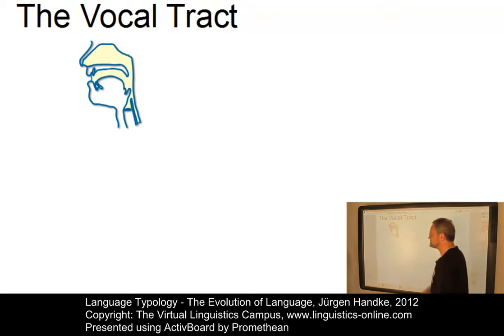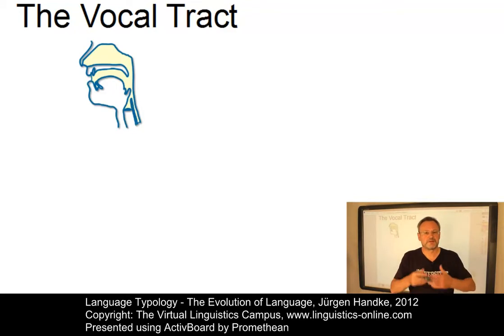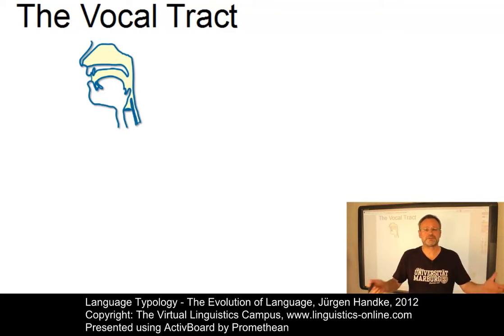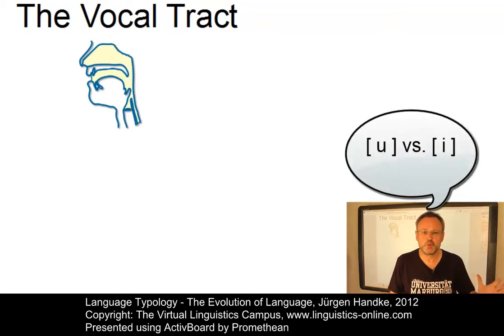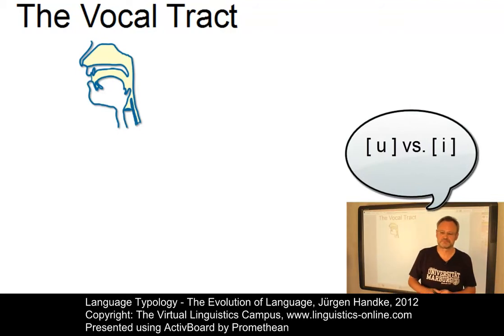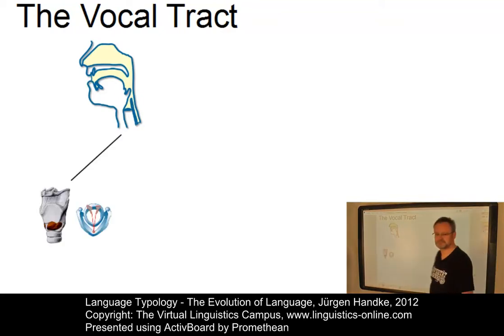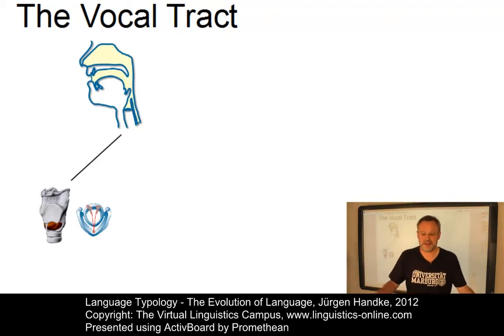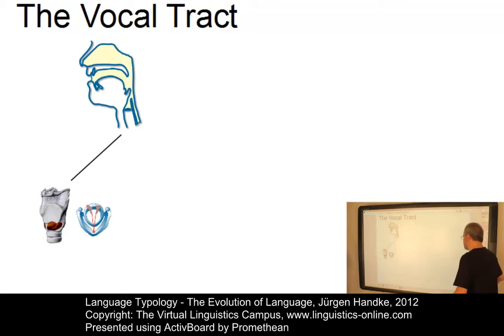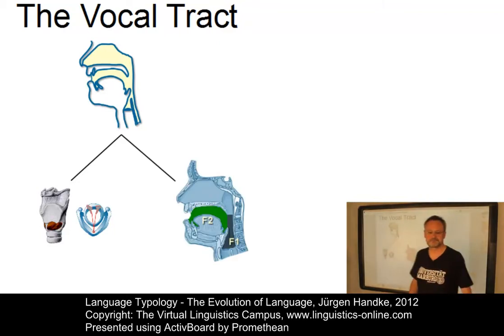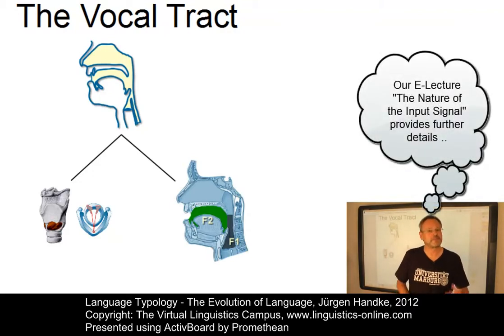The second prerequisite is a particularly shaped vocal tract that must be able to produce a sufficiently large sound repertoire. This involves, apart from the lips involved in rounded versus unrounded vowels such as OO versus E, a special source of phonation — we need the larynx with the vocal folds — and also a flexible resonance chamber that can amplify and modify the fundamental frequency created by the sound source in the larynx.